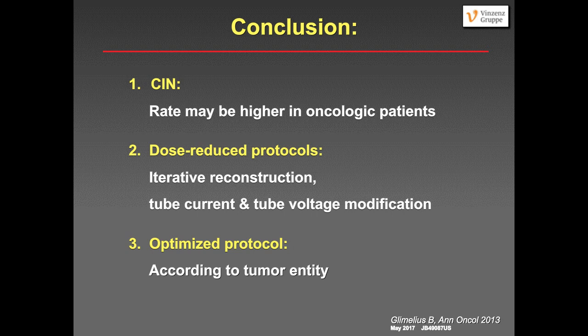One more question: for neck pathology, someone uses 1 mL/sec with 100 mL scanning at 100 seconds. That protocol would be too slow a flow rate and too long a delay. We use a higher flow rate of 2.5 to 3 mL/sec and scan in a more typical venous phase. At 100 seconds you no longer have good enhancement of the carotid artery or internal jugular vein. We go for a higher flow rate and shorter delay.